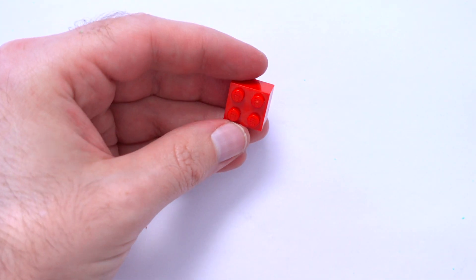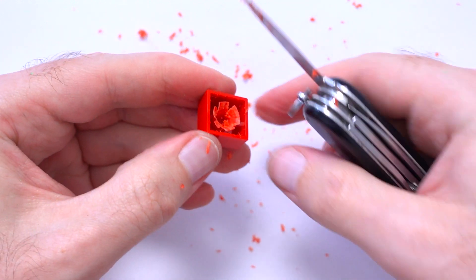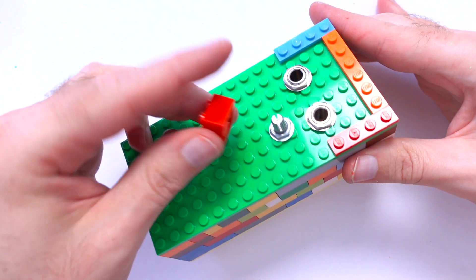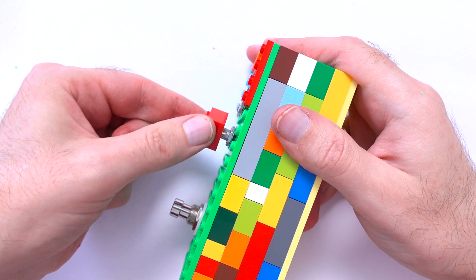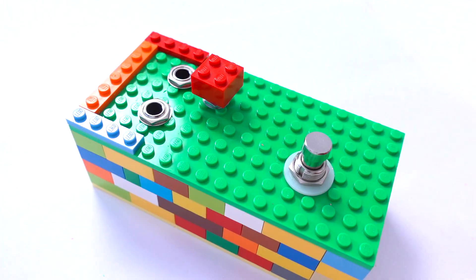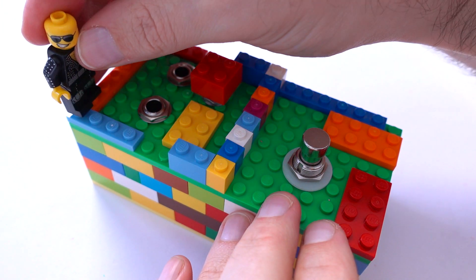Now make a knob from a cube brick. And that's all! If you want, you can decorate the pedal with Lego blocks or even with a small copy of yourself.